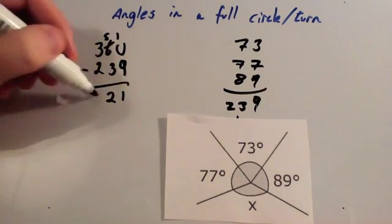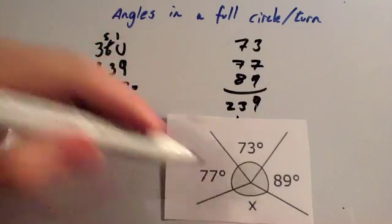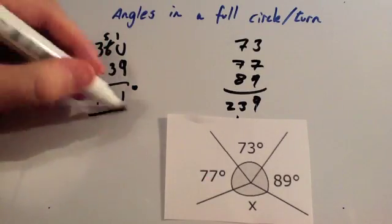So this missing angle, x, is 121 degrees.